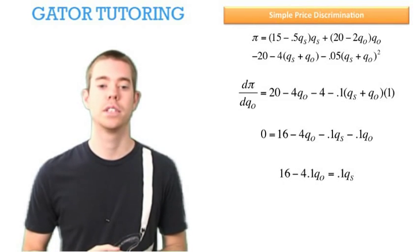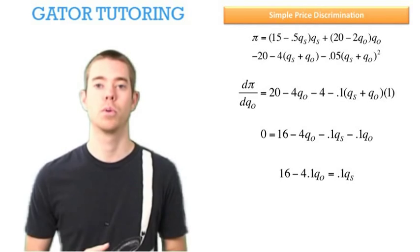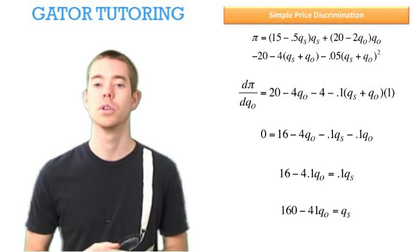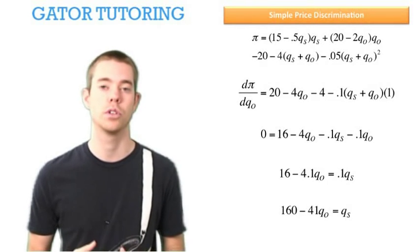So now we have 16 - 4.1QO, and we add 0.1QS to each side. We divide through by 0.1 and find that QS = 160 - 41QO.